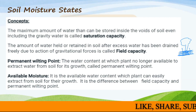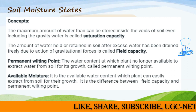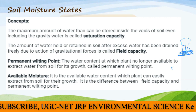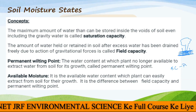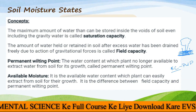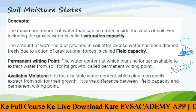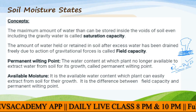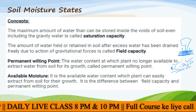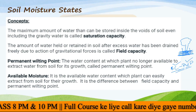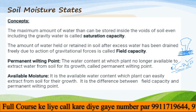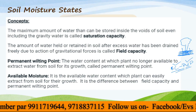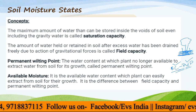Then we have available moisture — the water content that plants can easily extract from the soil for their growth. It is the difference between field capacity and the permanent wilting point. Below the permanent wilting point plants cannot absorb water, and above field capacity the water drains away freely. The plant utilizes only the water between field capacity and the permanent wilting point, and whatever amount is available in between those points is called the available moisture of the soil.